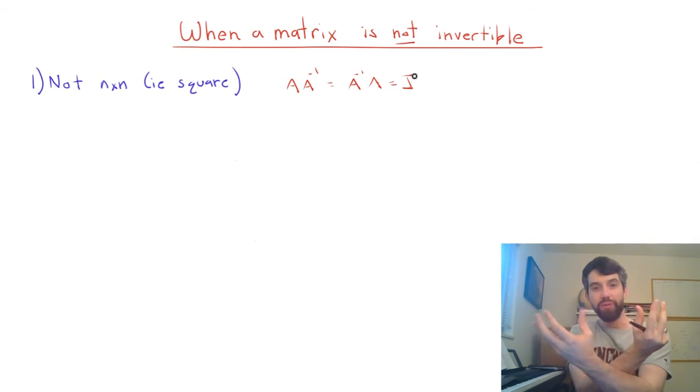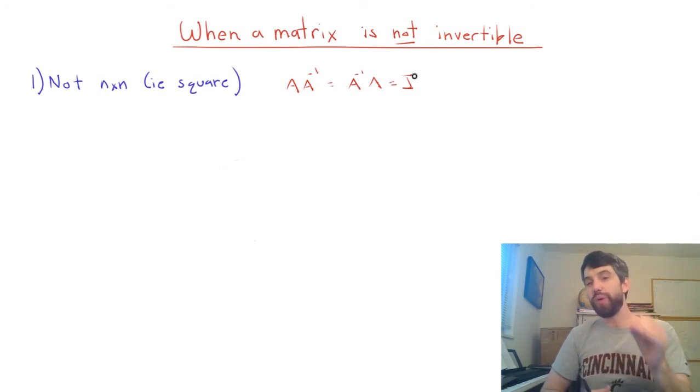And if you flip them around the inner dimensions need to match again, but those are just the outer dimensions. And so what you really get is that it has to be a square matrix. So that's our first condition. Cannot possibly be invertible if it's not square.